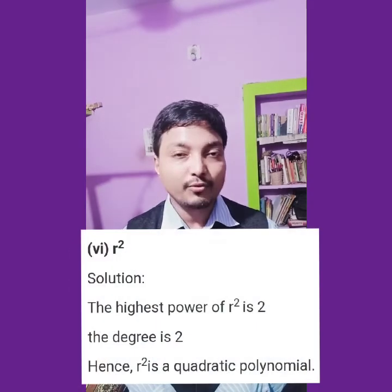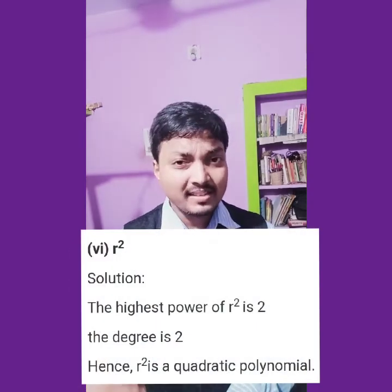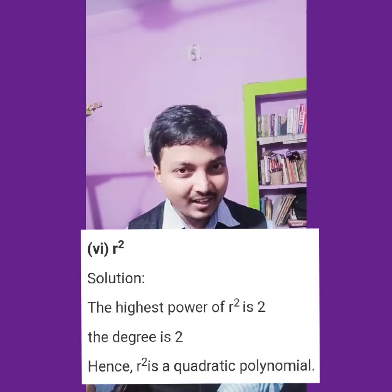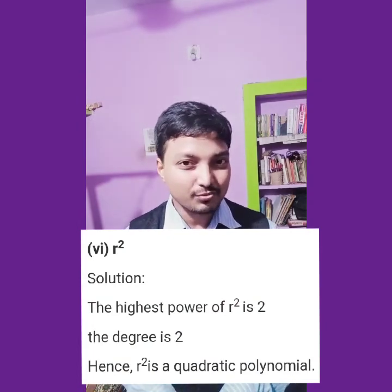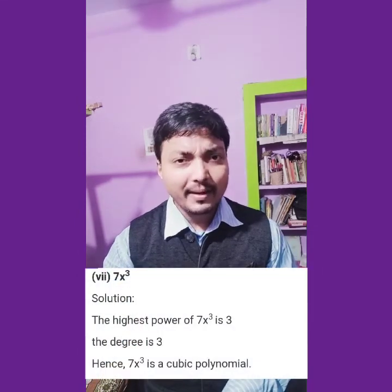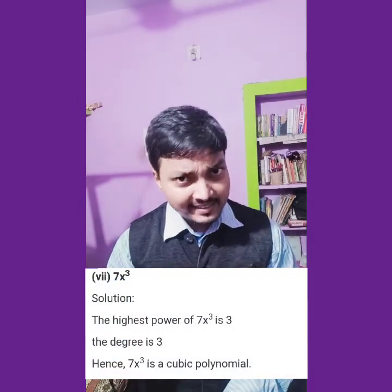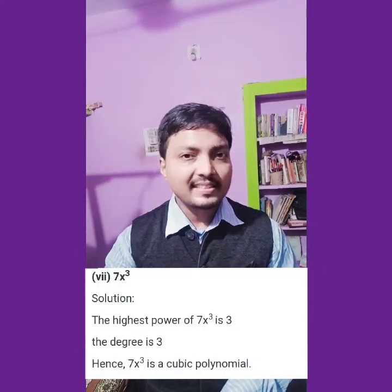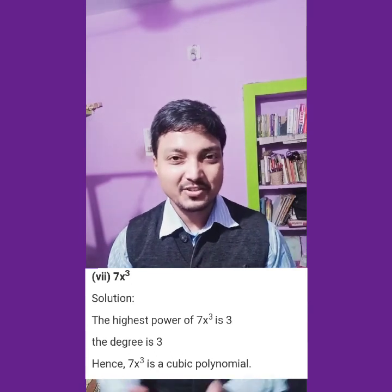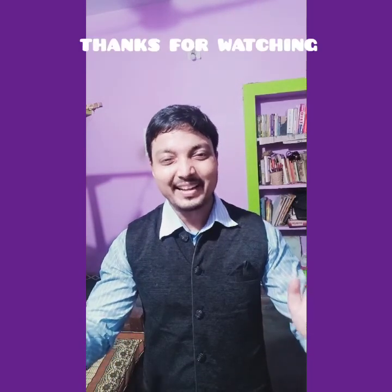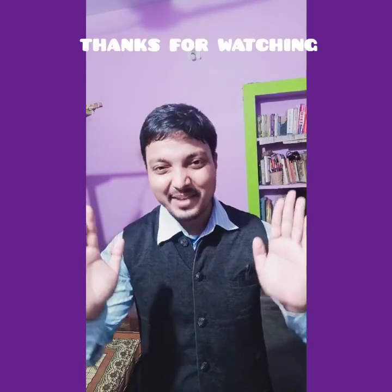Next one is 3t — single term, t to the power 1, so it is linear. Next one is r square — monomial, power of r is 2, so it is quadratic. Last one is 7x to the power 3 — single term with power 3, so it is cubic.